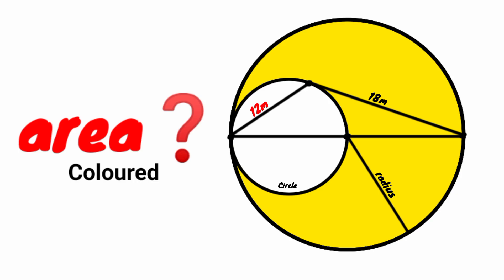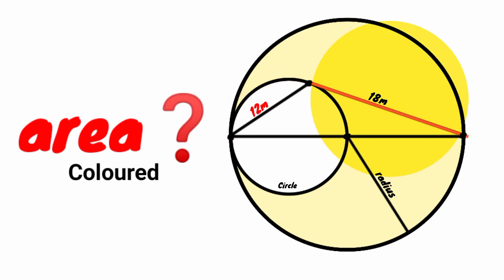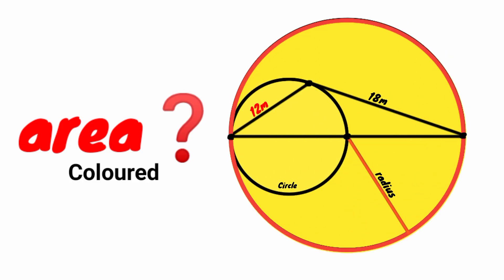Hi everyone, welcome back to another interesting question. We are to determine the colored area — the yellow area. We have this line segment to be 12 meters, and this one is 18 meters, which is the radius of the big circle.